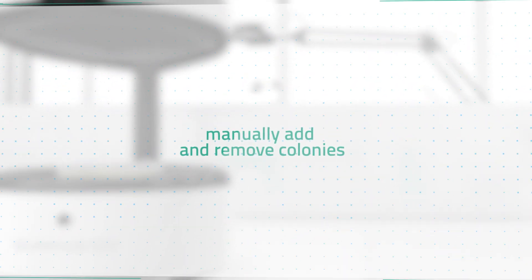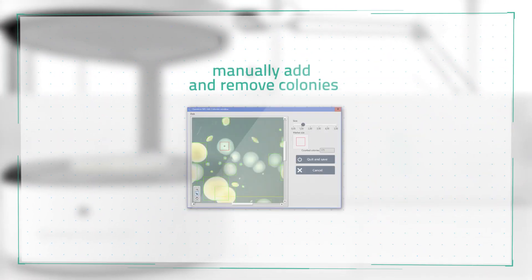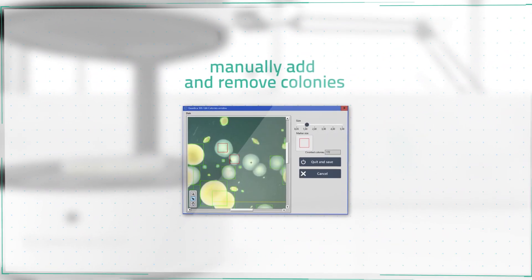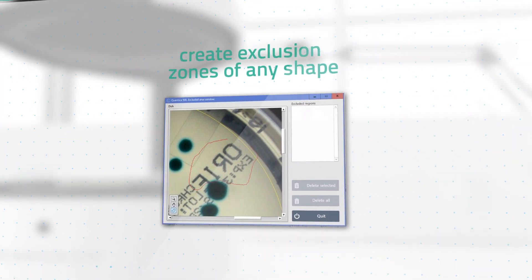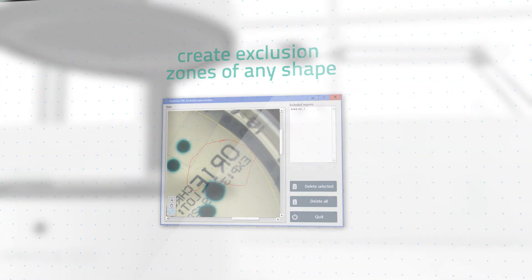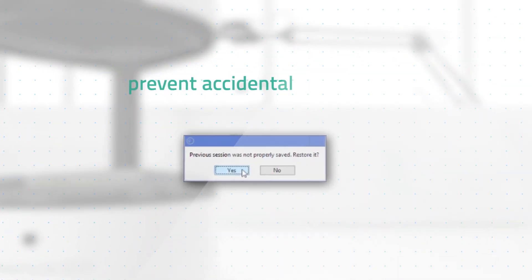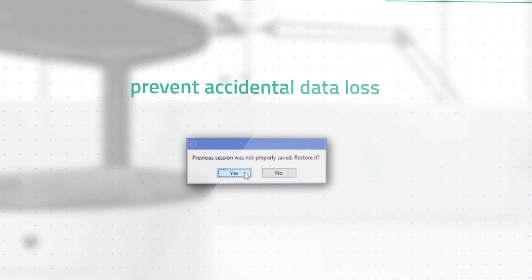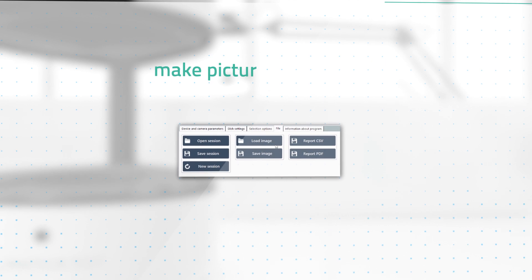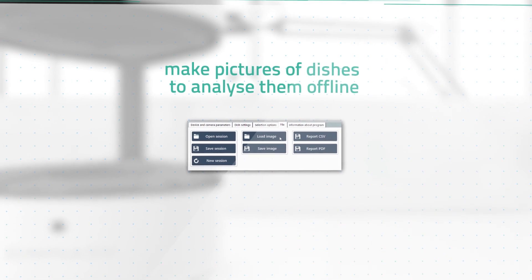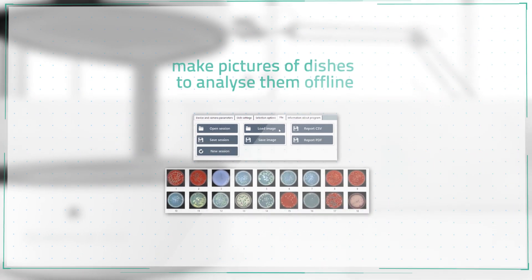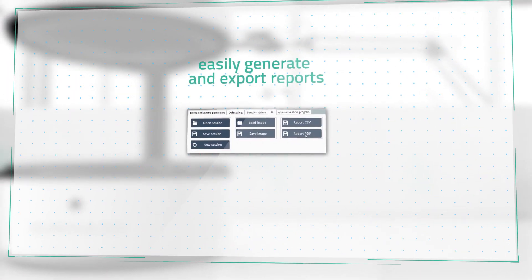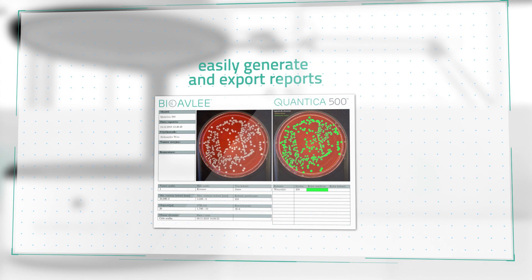among others, allow you to manually add and remove colonies, create exclusion zones of any shape, prevent accidental data loss, make pictures of dishes to analyze them offline, and easily generate and export reports.